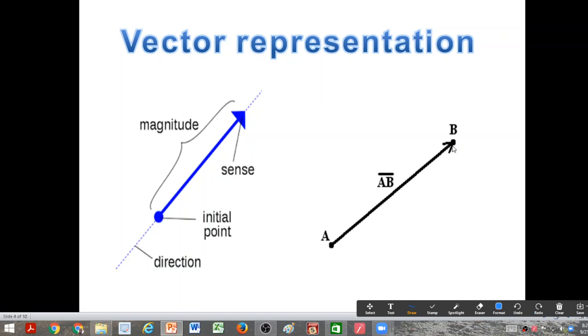So in mathematical physics we can represent the vector AB as AB with a bar on top. Sometimes what we do - in some books also, vectors are represented with bold letters.